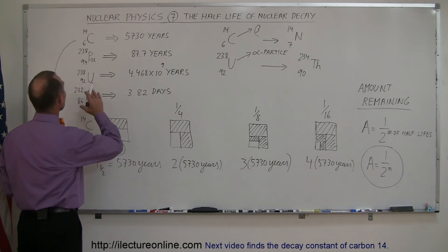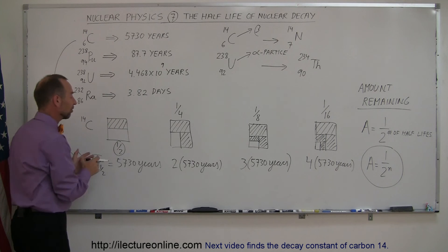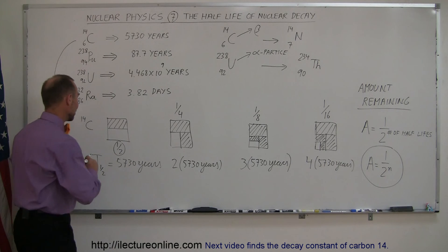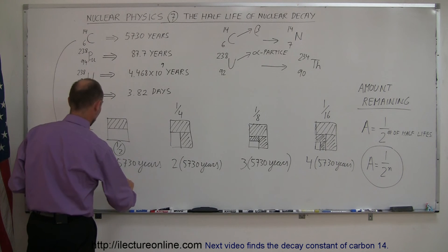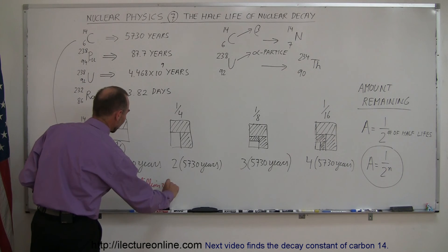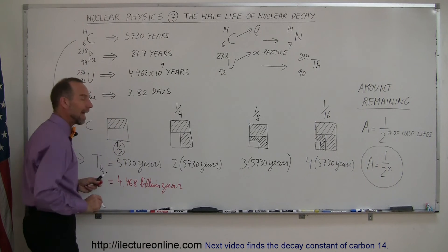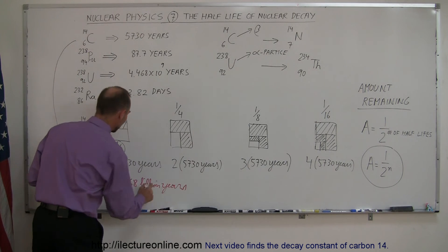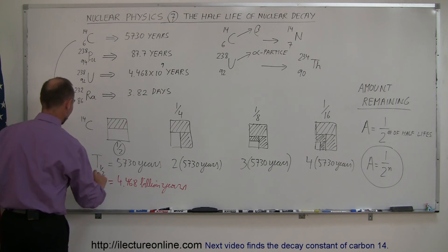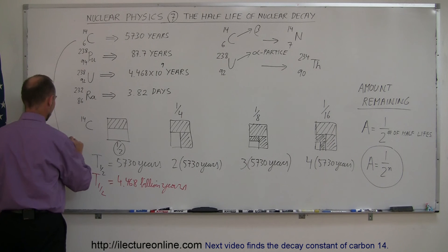Now, of course, in the case of uranium-238, you can use the same formula, but then instead of half-life being 5,730 years, the half-life would then be equal to 4.468 billion years. So you have to wait 4.5 billion years for half of uranium-238 to have decayed into thorium-90. So that would be the half-life for uranium-238, as opposed to this being the half-life for carbon-14.